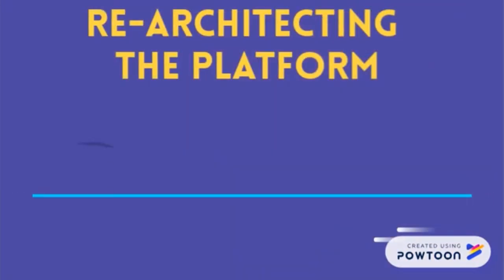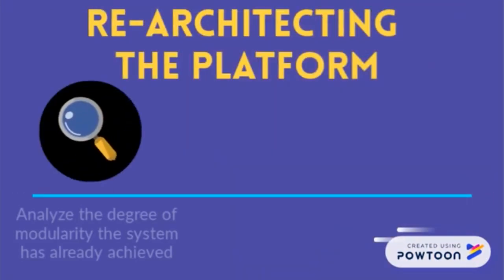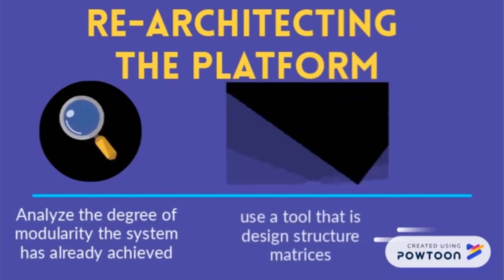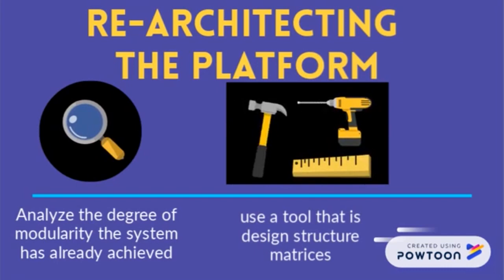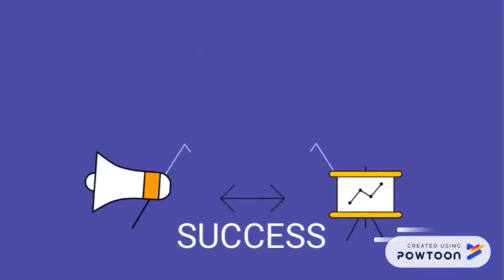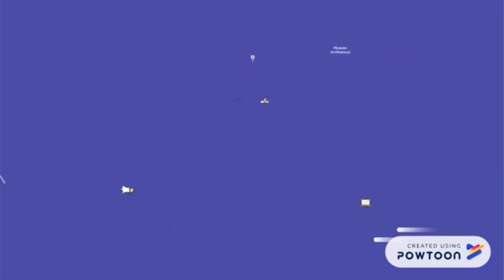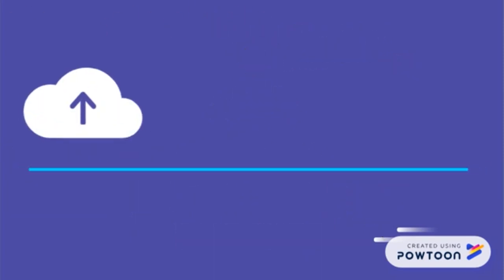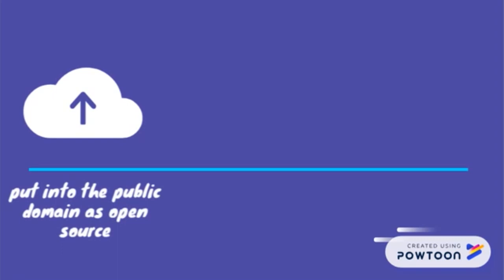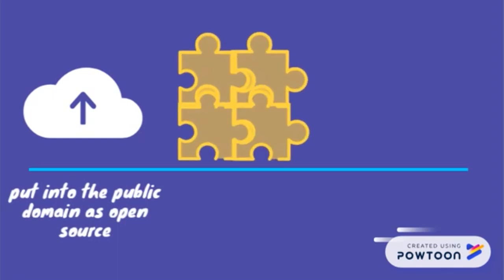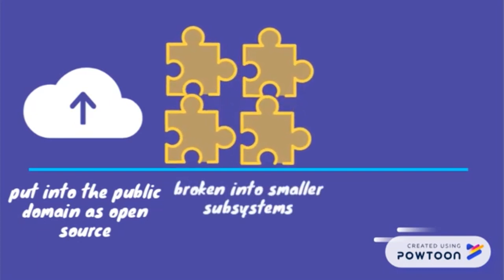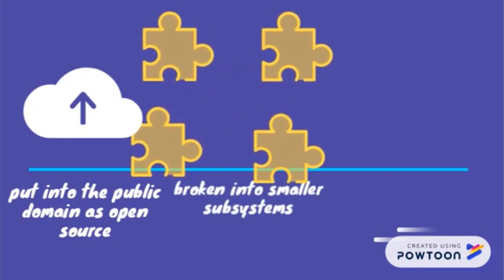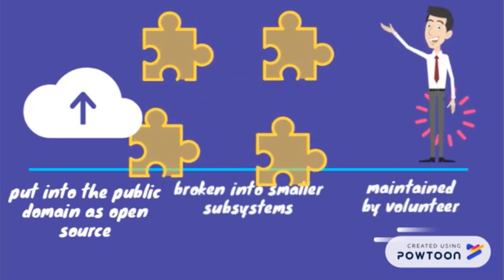Re-architecting the platform toward a modular design is possible. First, you should analyze the degree of modularity the system has already achieved, using a tool called design structure matrices. There is an example of a product that successfully evolved from an integral to a modular architecture: when software was put into the public domain as open source, the commercial firm that owned the copyright invested significant resources to make the transition, breaking it into smaller subsystems maintained by distributed teams of volunteer developers.